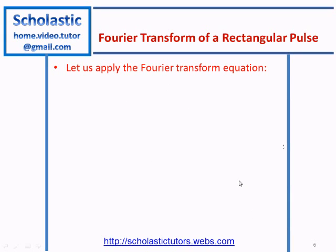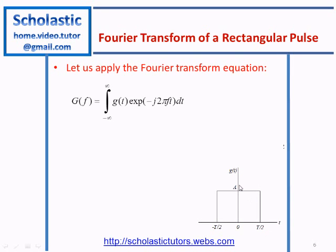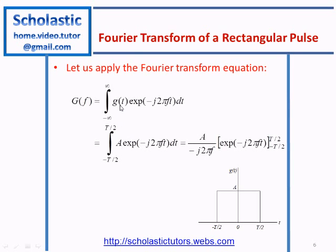Now let's apply the Fourier transform equation to the pulse. The equation is g(t) times exponential negative j 2π ft, integrated from minus infinity to plus infinity dt. Our function is A times exponential minus j 2π ft dt. The limits of integration from minus infinity to plus infinity will become minus T/2 to plus T/2, because below and above those values the function is zero.